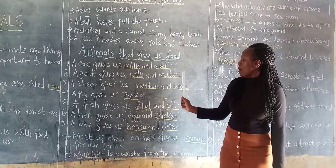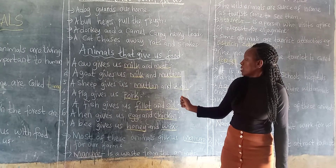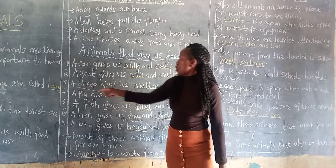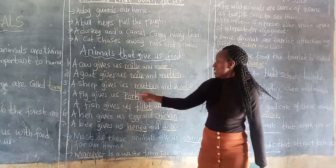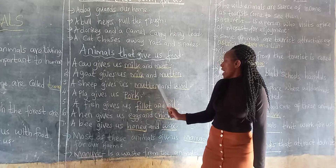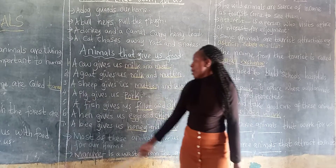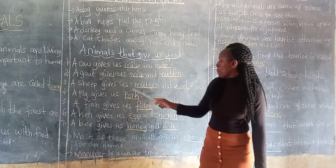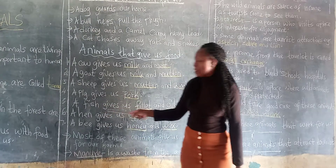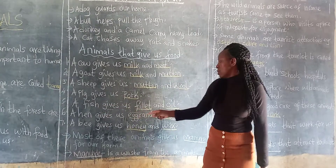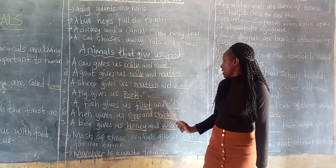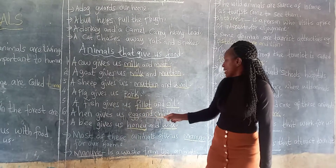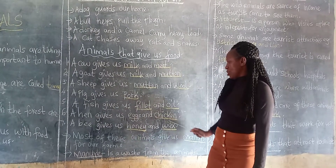So the meat of a goat is called mutton. Then a sheep gives us mutton and wool. Then a pig gives us pork. Then a fish gives us fillet and oil. Then a hen gives us eggs and chicken.